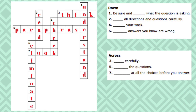All right class, let's see how we did. Number one was: be sure and understand what the question is asking. Number two down: read all of the directions and questions carefully. Number four: check your work. Number six: eliminate answers you know are wrong. Now let's see how we did going across. Number three across: think carefully. Number five across: paraphrase the questions. Number seven across: look at all the choices before you answer.